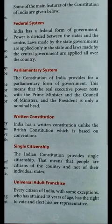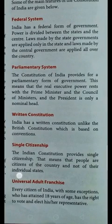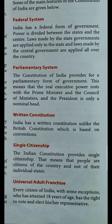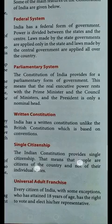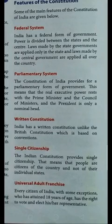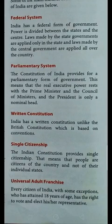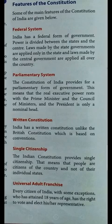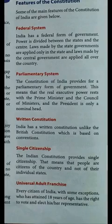The next feature is single citizenship. The Indian constitution provides single citizenship — there is no difference between upper caste or any other group. People are citizens of the country, not of their individual state. Whether from Delhi, Punjab, or Haryana, everyone gets the same citizenship. Universal adult franchise means any citizen of 18 years and above has the right to vote and elect their representatives.